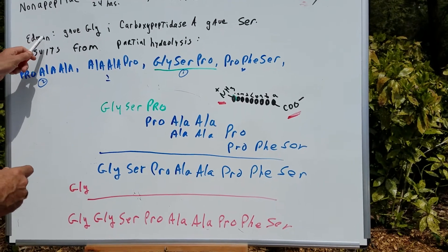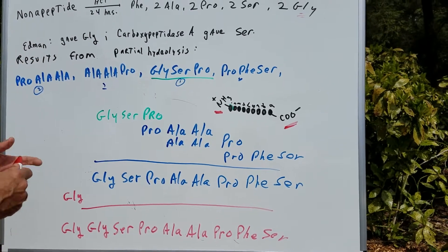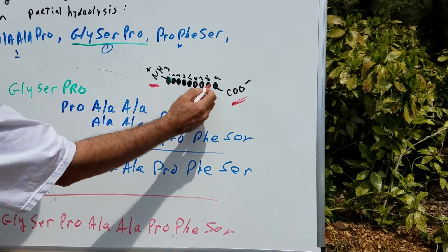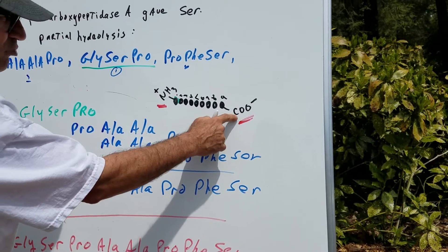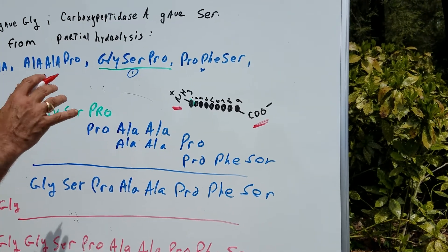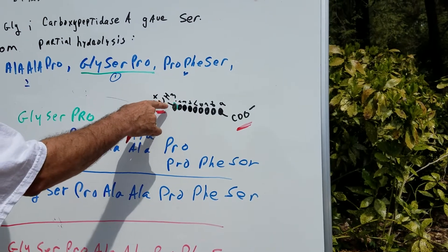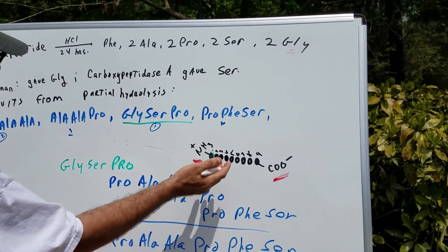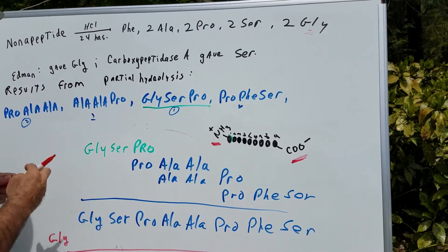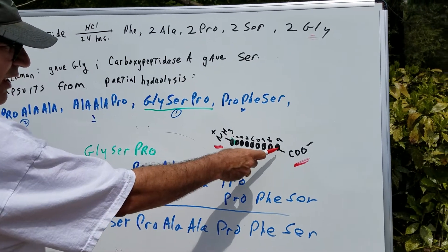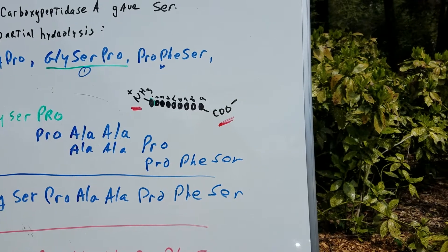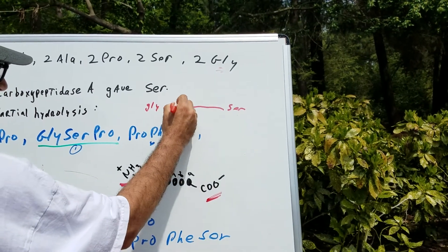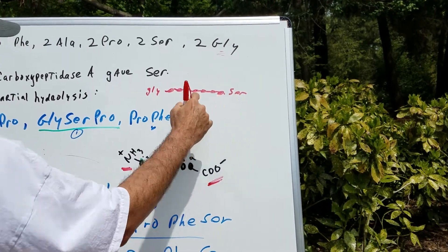Now, the Edman degradation gave Gly, and the carboxypeptidase reaction gave serine. You might ask, what does that even mean? If you look at the amino acid chain, I drew out nine — that's the nona peptide. The left side is the N-terminal, and the right side is what we call the C-terminal. The Edman degradation identifies the amino acid at the N-terminal position. So if it gave Gly, that means the first amino acid on the left side is Gly. Carboxypeptidase reacts at position nine, the C-terminal. So at minimum, we know it starts with Gly and ends with Ser, leaving seven more positions to complete.